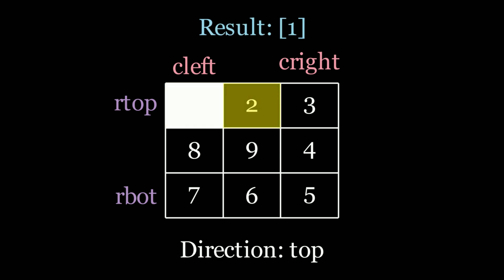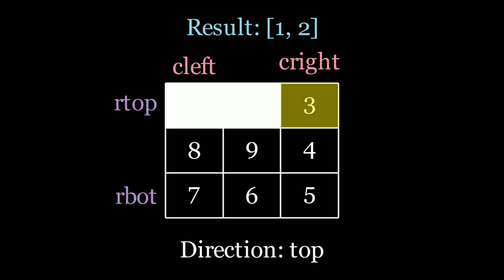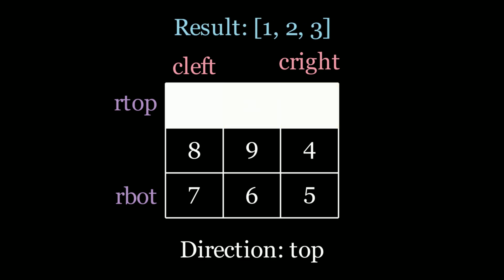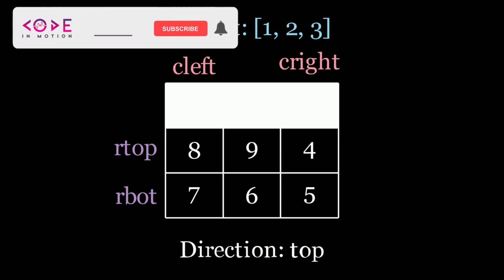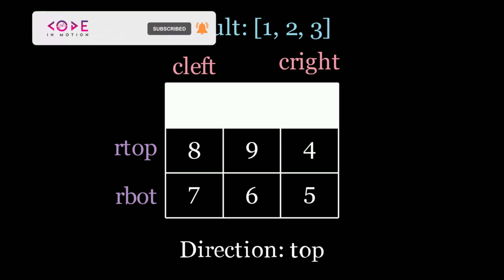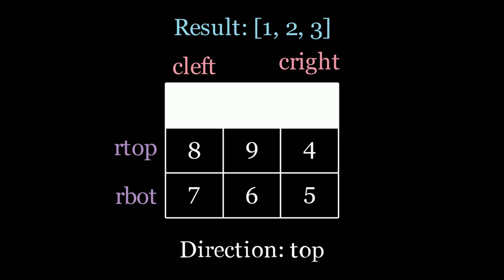I'm going to introduce the idea of scanning a specific direction — starting at the top. Using the R_top index for the row, I scan all elements from C_left to C_right. So I scan 1, then 2, then 3. Now I've finished with the top row, so I change the boundary — I move R_top one below — and then I change direction to right.